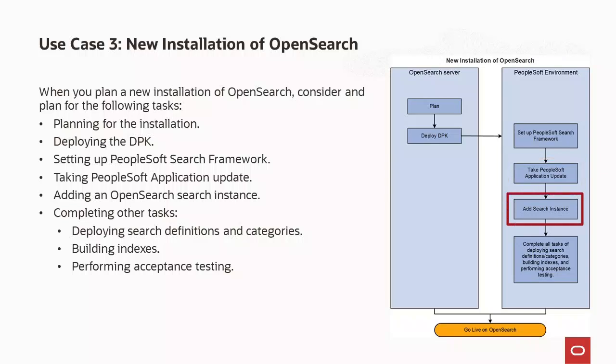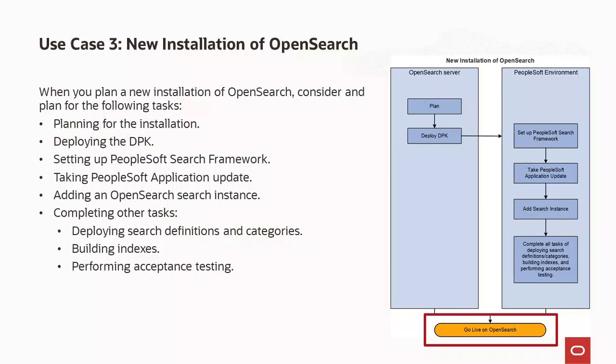On the PeopleSoft environment, set up PeopleSoft Search Framework. Refer to the administering PeopleSoft Search Framework topic in the PeopleTools 8.61 Search Technology Online Help. Take PeopleSoft application updates. Add a search instance — you can use the search instance properties page or the Automated Configuration Manager to run a template to create a search instance. To complete the setup of search functionality, perform other tasks such as deploying search definitions and categories, building indexes, and testing the search functionality. On successfully completing all these tasks, you are set to go live on OpenSearch.